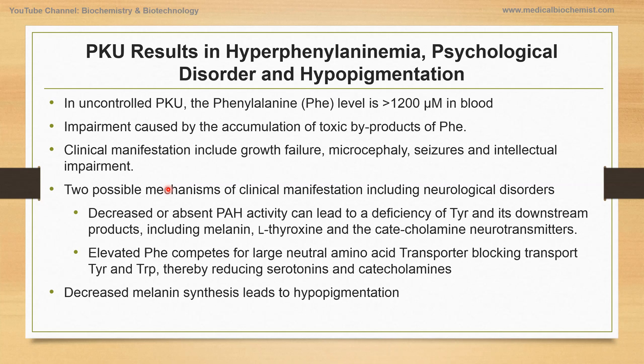First, decreased or absent PAH activity leads to deficiency of tyrosine and its downstream products, including melanin, thyroxine, and catecholamine neurotransmitters. Second, elevated phenylalanine competes for the large neutral amino acid transporter, blocking transport of essential amino acids such as tyrosine and tryptophan, thereby reducing serotonin and catecholamines. Decreased melanin synthesis also leads to hypopigmentation.